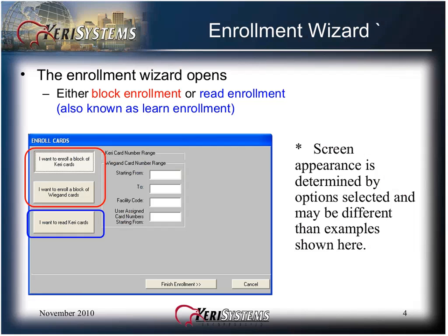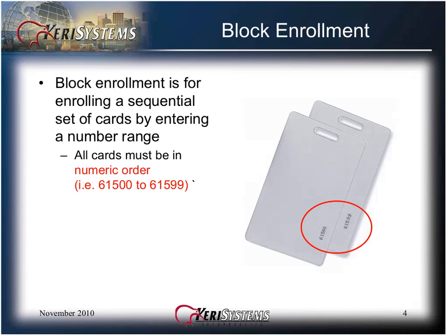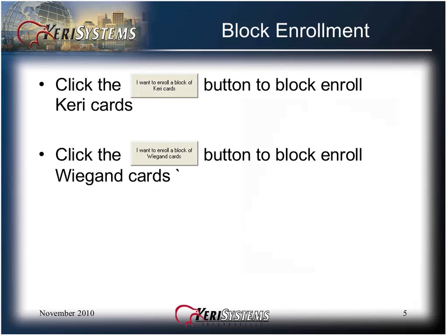The screen appearance is determined by options selected and may be different than the examples shown here. Block Enrollment is for enrolling a sequential set of cards by entering a number range. All the cards must be in numeric order. You must know the facility code of the credentials for proper block enrollment. Begin the Block Enrollment by clicking the I Want to Enroll a Block of Carry Cards button to block enroll carry cards, or click the button to block enroll Wiegand cards.